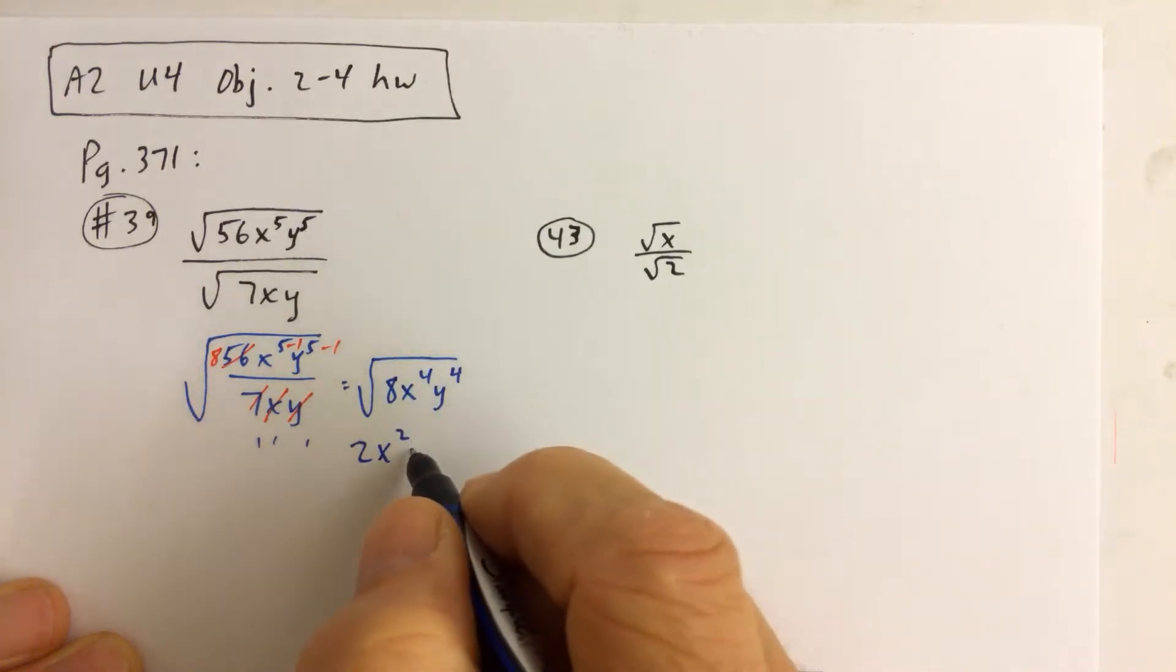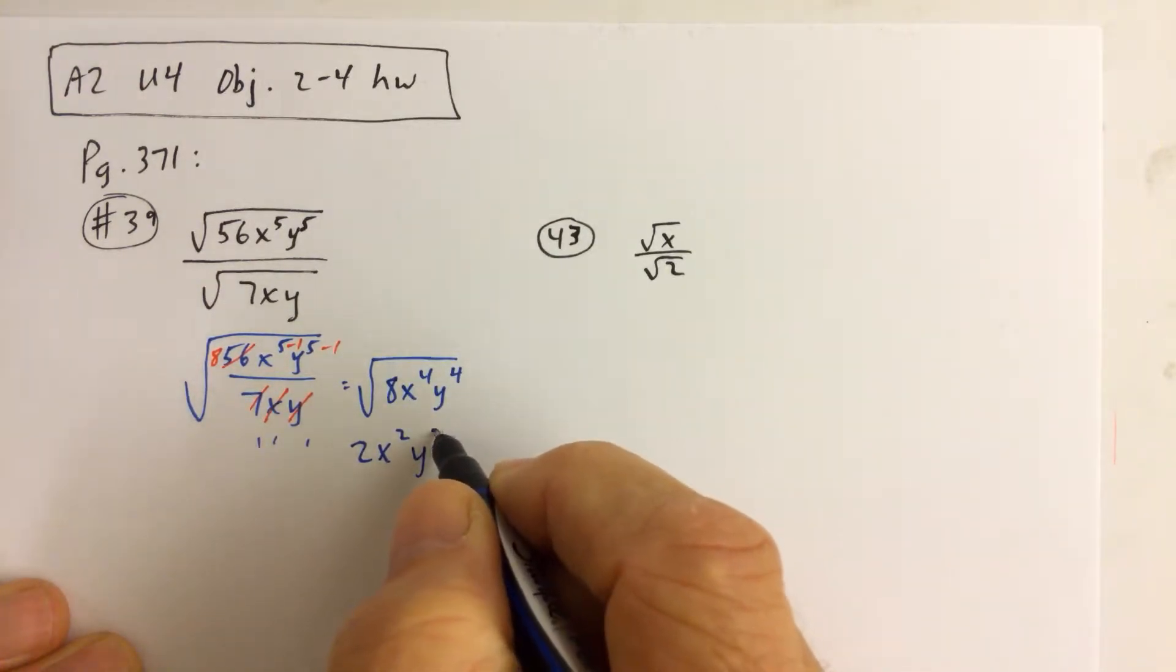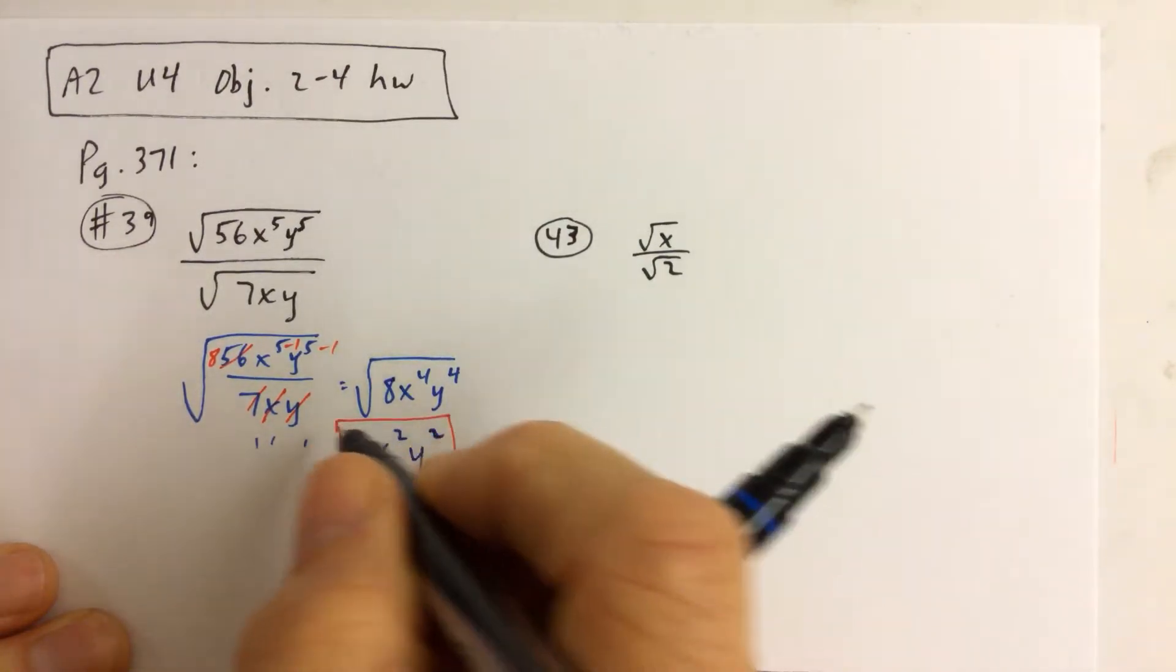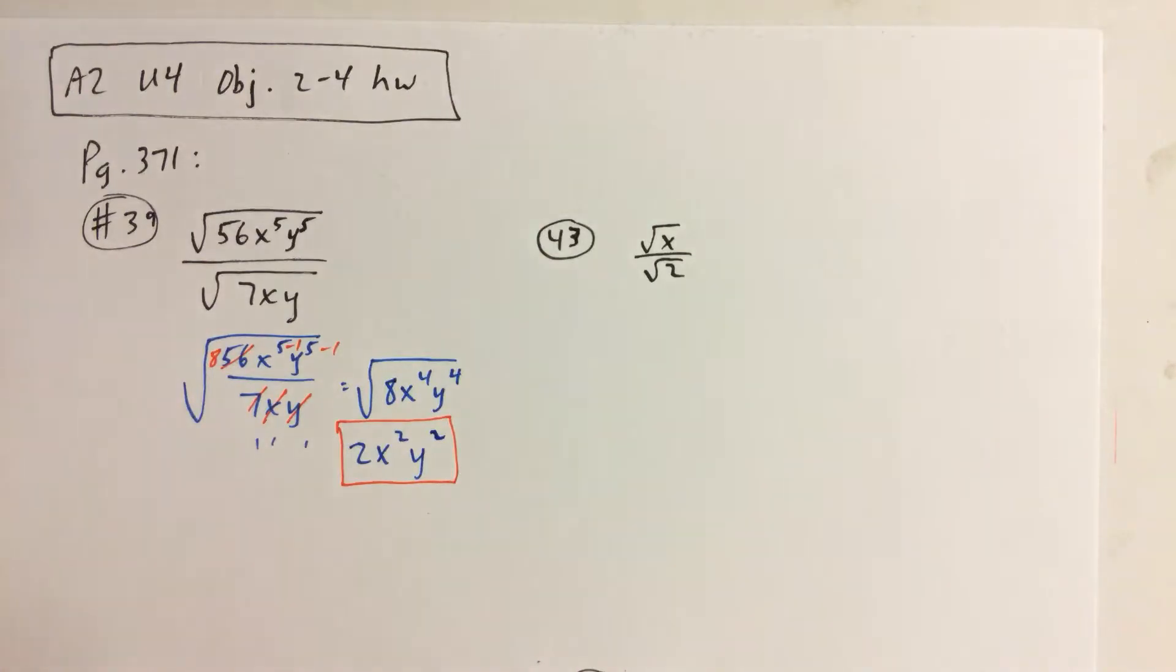Now we get down to a sorting cards problem, so I'll leave the details of that part to you. But what we should get here is 2 times x squared times y squared.